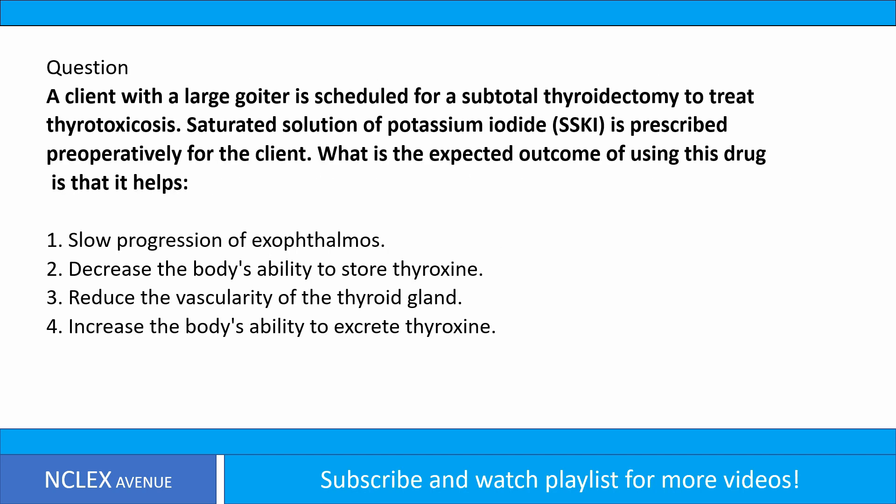Question. A client with a large goiter is scheduled for a subtotal thyroidectomy to treat thyrotoxicosis. Saturated solution of potassium iodide, SSKI, is prescribed preoperatively for the client. What is the expected outcome of using this drug? It helps: 1. Slow progression of exophthalmos. 2. Decrease the body's ability to store thyroxine. 3. Reduce the vascularity of the thyroid gland. 4. Increase the body's ability to excrete thyroxine.